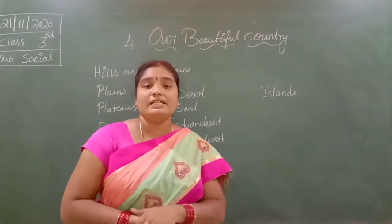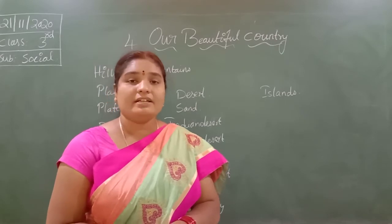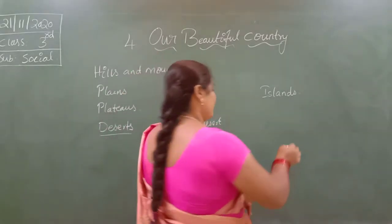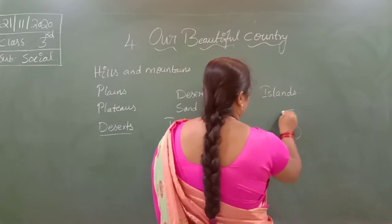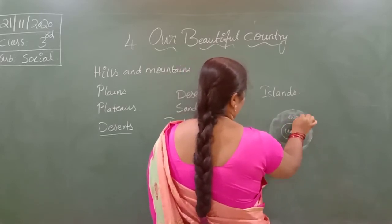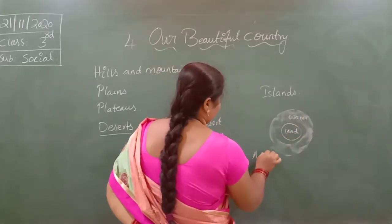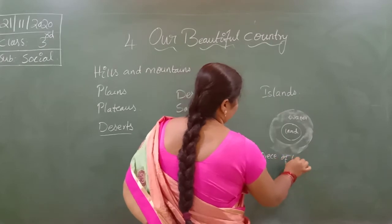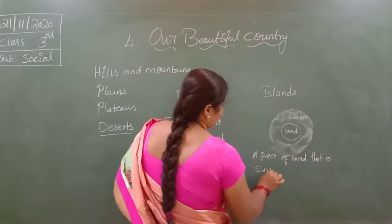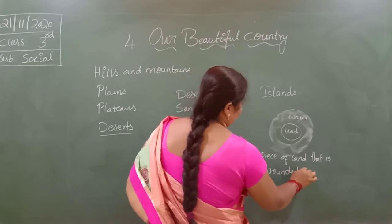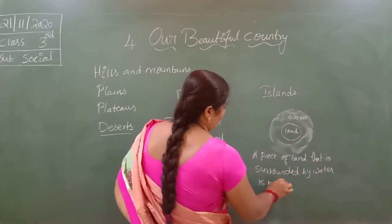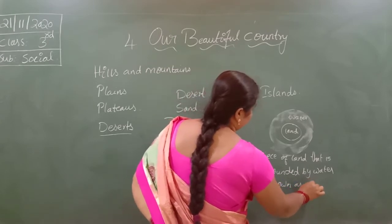A piece of land that is surrounded by water is known as an island. A piece of land that is surrounded by water is known as an island.